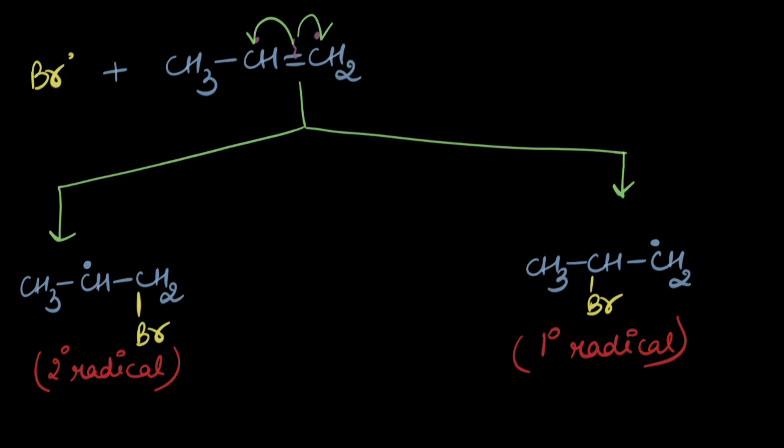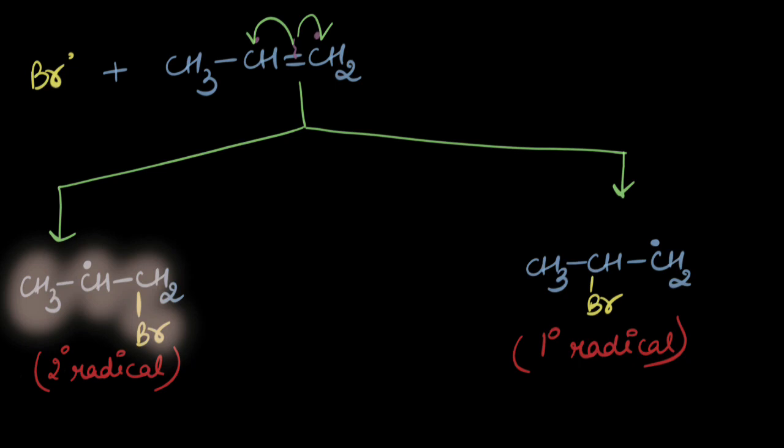The more stable the intermediate, the more are the chances for the reaction to be driven in its formation. So I'll have to figure out which of the two radicals is more stable. It's the left one.